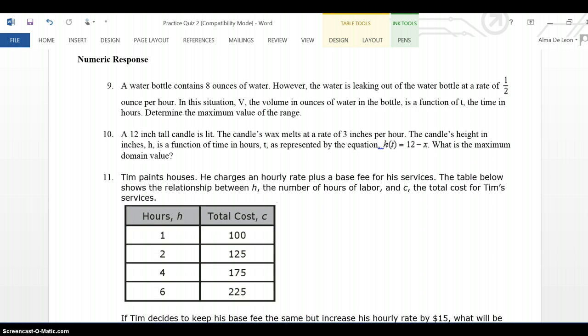Number 9. A water bottle contains 8 ounces of water. However, the water is leaking out of the water bottle at a rate of 1.5 ounce per hour. In this situation, V, the volume in ounces of water in the bottle is a function of T, the time in hours.